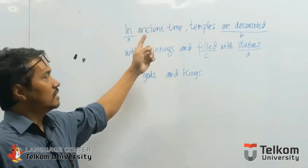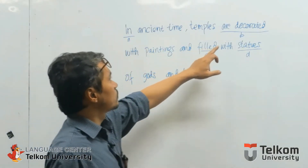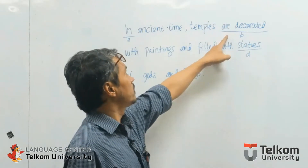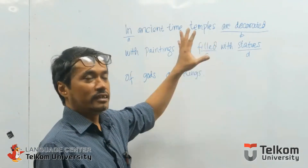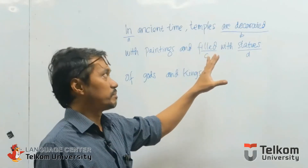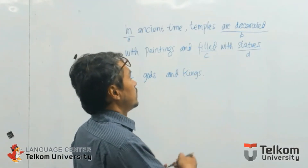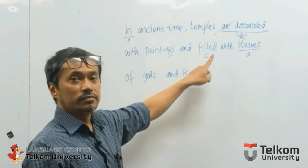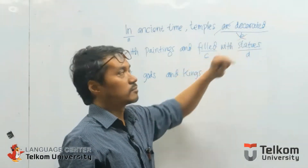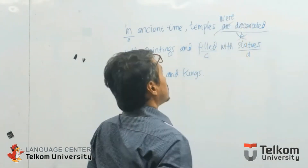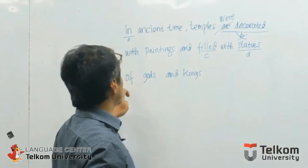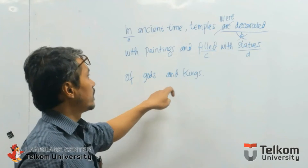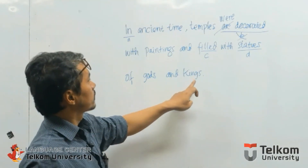In ancient time — it indicates the time, so there's no problem with it. What about this one: 'all decorated'? Do you find 'are' is suitable with the time? Because 'are' is 'to be' for present time. So 'are' is incorrect here — we cannot use 'are' when the time indicator is in past. What about 'field'? Field is okay, because it is parallel with the other verb. And 'status' is a noun that comes before the preposition 'of,' and there will be another noun after 'of.' Status and 'gods' are correct because the nouns are in plural.